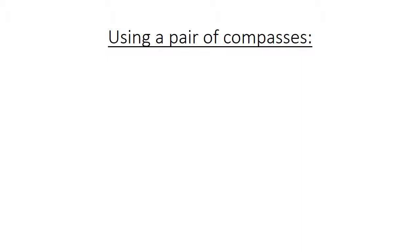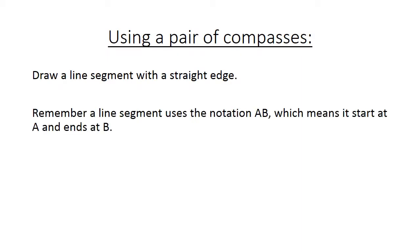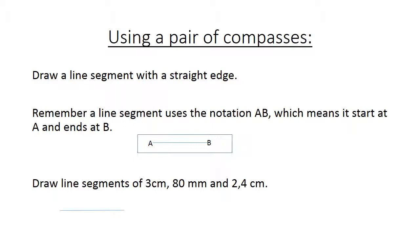Using a pair of compass. Draw a line segment with a straight edge. Remember, a line segment uses the notation AB, which means it starts at A and ends at B. There we have line segment AB. Now draw line segments of 3 cm, 80 mm, and 2.4 cm. You can practice this on a piece of paper. I am just going to draw 3 cm. There is A and B.